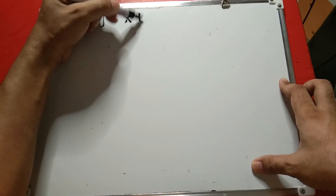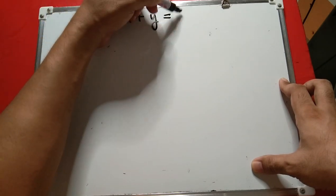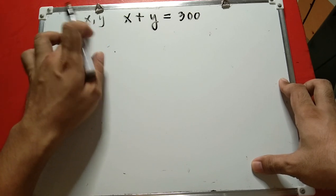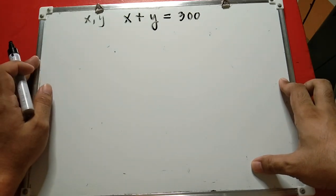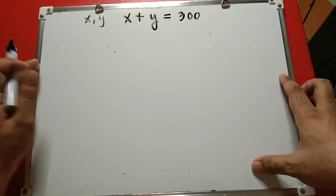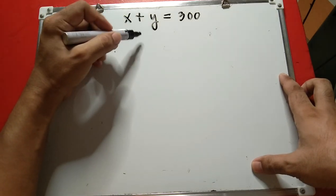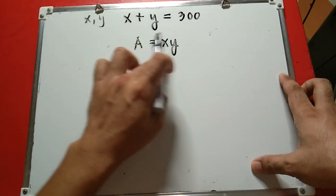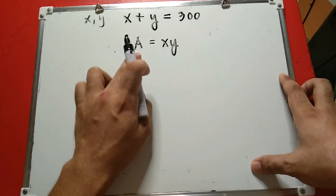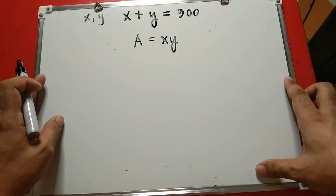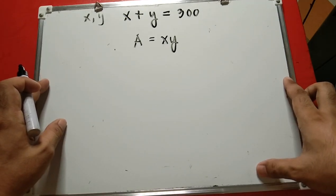We are told that the sum is 300, so this is the constraint for the problem: x plus y equals 300. These two variables are the two positive numbers. We are being asked to maximize the product, so we write A equals x times y, where A is the maximum product.